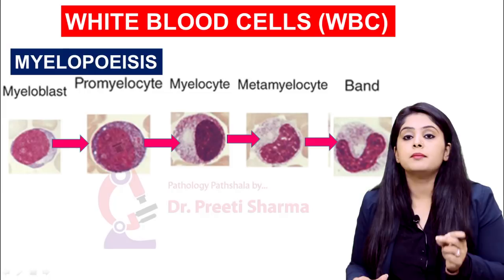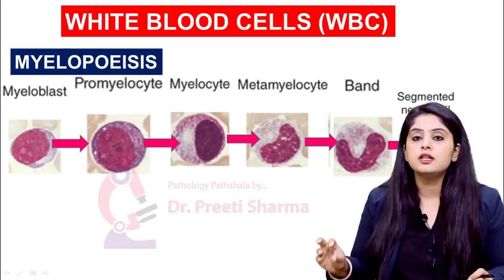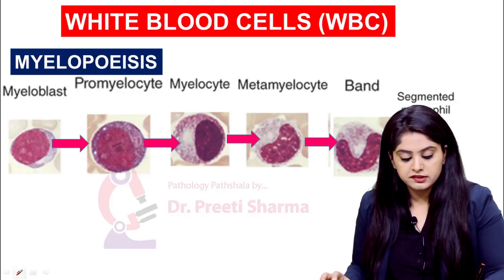Remember, a band cell is also known as a stab cell. And finally, after the band or the stab cell, we have a mature neutrophil which is going to have these segmented nuclear lobes.